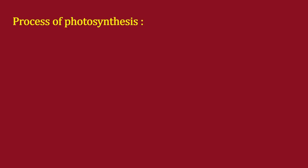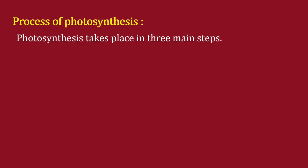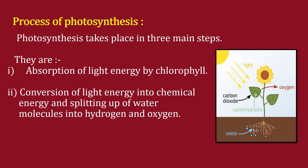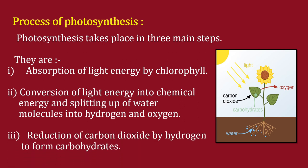Photosynthesis takes place in three main steps: first, absorption of light energy by chlorophyll; second, conversion of light energy into chemical energy and splitting of water molecules into hydrogen and oxygen; and third, reduction of carbon dioxide by hydrogen to form carbohydrates.